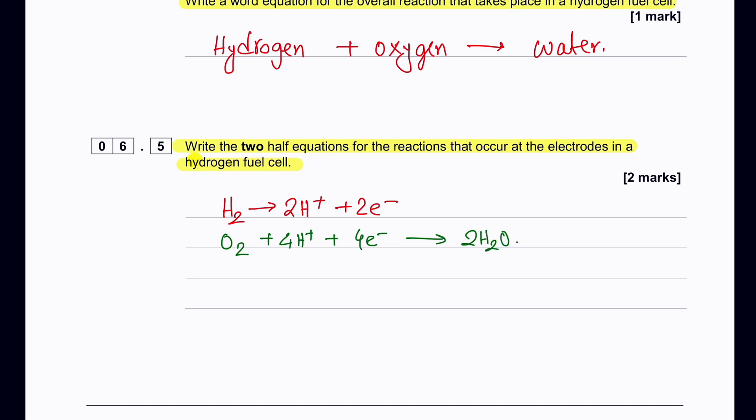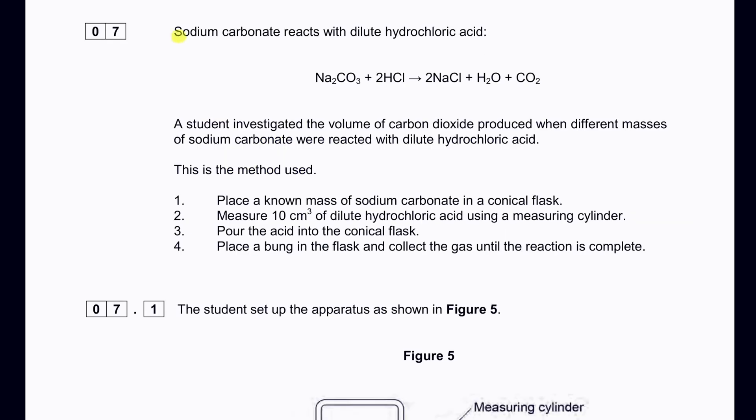If you notice, both half equations are not overall balanced with each other, but balancing them together is not required here — each half equation is individually balanced. Moving on: sodium carbonate reacts with hydrofluoric acid to produce sodium chloride, water, and carbon dioxide.